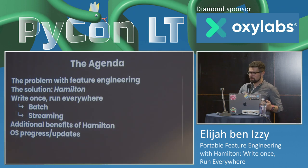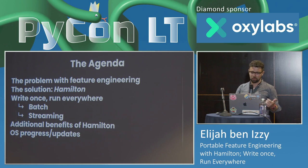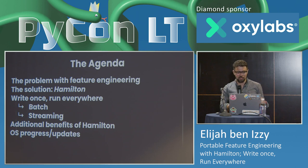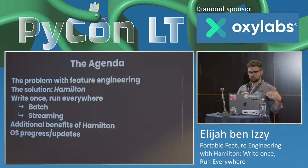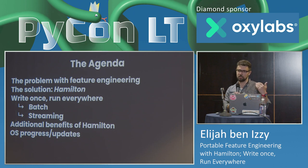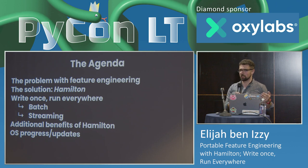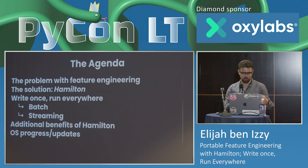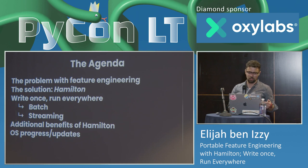On the agenda today: first, I'm going to talk about the problem with feature engineering — what actually makes it challenging. Then I want to talk about Hamilton, the solution we came up with. Then I'm going to talk about how you can use Hamilton for feature engineering to write once and run in multiple contexts, focusing on the batch and streaming context. Then I'll talk about additional benefits of Hamilton, and finally our open source progress, the community, and some updates.